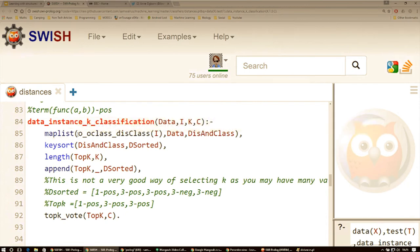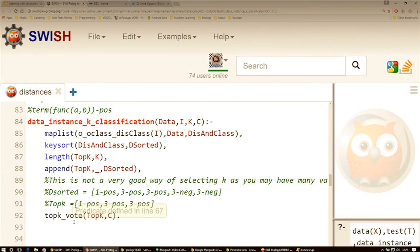We're just going to do a map list of the distances. Then we're going to put those into pairs. We're going to do a key sort, and then we're going to get the length, so how many k that we want. And we're just going to take the top k, so the ones closest to our particular instance. And then we're going to take a vote from that.